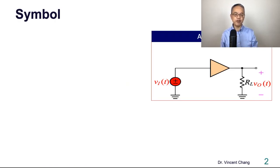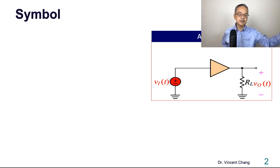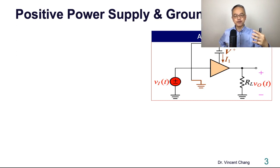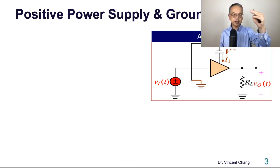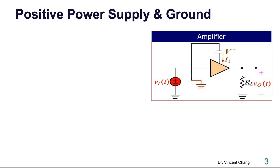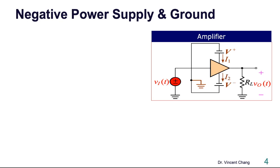Let's start with the circuit symbol of an amplifier. The triangle represents an amplifier. The left-hand side is the input voltage VI and the output side is the output voltage VO. An amplifier is an active circuit system which requires two power supplies. On the top is the positive power supply, V positive, which is the voltage difference between the positive supply terminal and the ground. Similarly, the negative supply voltage, V negative, is the voltage difference between the negative supply terminal and the ground.